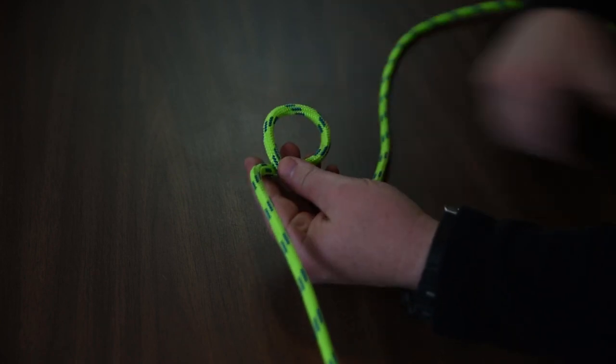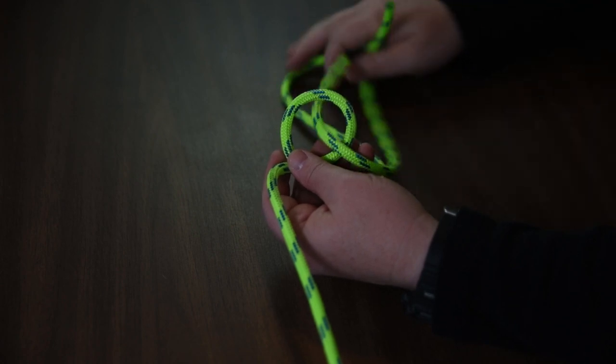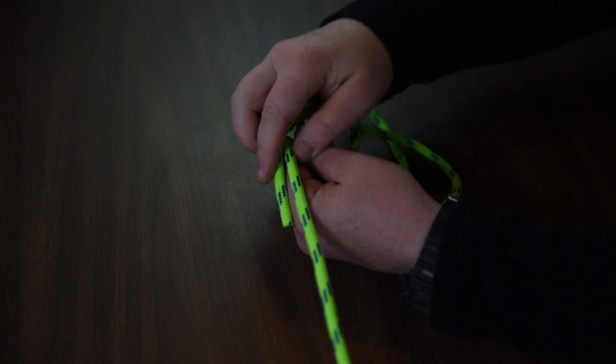Then we're going to take the length, run through the hole and instead of going around the tree or the standing end, we come back up, go through the loop the second time and then we wrap around.